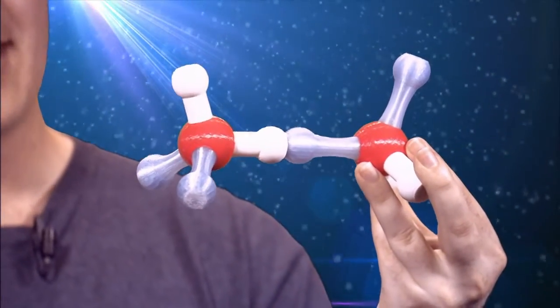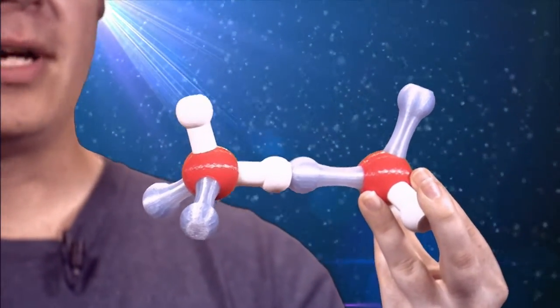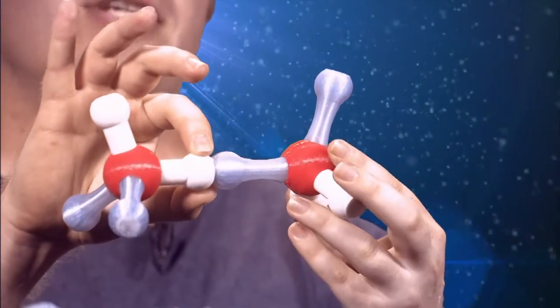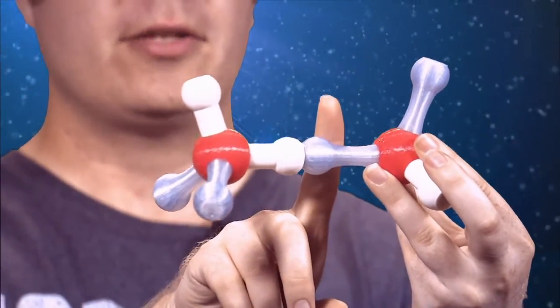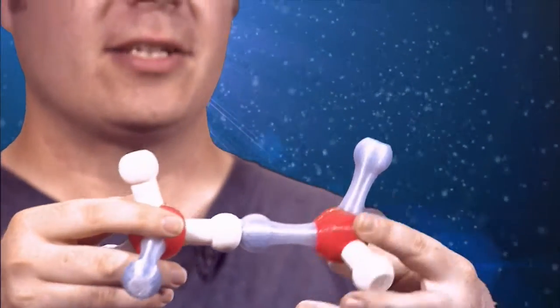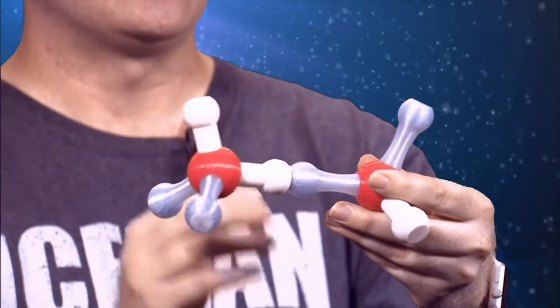Well, water can interact with other water molecules. So if we take a second water molecule over here. Now we printed these molecules so they have little magnets in them, and the polarity of the magnets are set up so you can actually have hydrogen bonds. A hydrogen bond is when a hydrogen atom on one water molecule interacts with the lone pair on the other water molecule. So they come together and are basically attracted to one another.